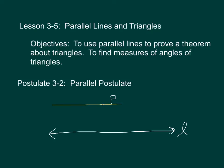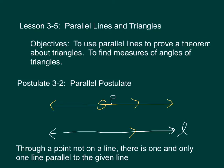Through point P, there is one and only one line that is going to be parallel to L. We can't have more than one — there is just this one. The wording of the Parallel Postulate: through a point not on a line, there is one and only one line parallel to the given line. You can pause the video now to write that down or draw the picture.